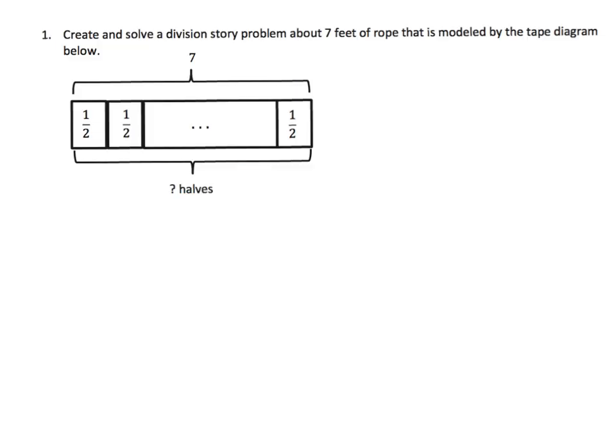So on this problem, it says create and solve a division story about 7 feet of rope that is modeled by this tape diagram. So this big tape diagram here represents 7 feet of rope, and we can see that there's a series of halves that this tape diagram has been cut into, and we don't know how many halves there are.